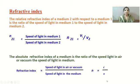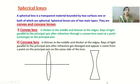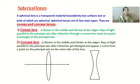Next are spherical lenses. For detailed information about spherical lenses, you should watch our previous videos where the making of spherical lenses is explained in detail. A spherical lens is a transparent material bounded by two surfaces, one or both of which are spherical.